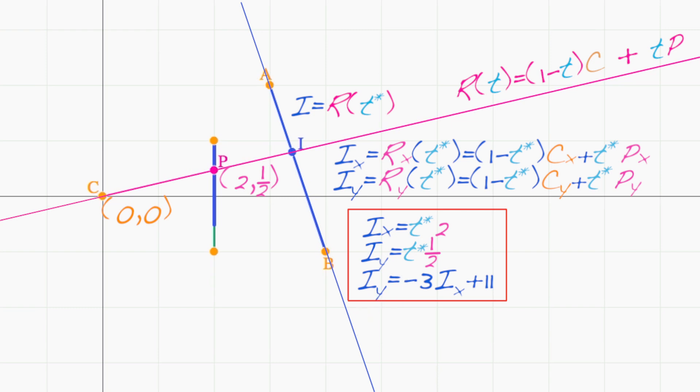We can solve the system of equations by substituting the first two equations into the third to get an equation just in t star: 1 half t star equals negative 3 times 2 times t star plus 11. Solve this for t star, then plug that value of t star into the first two equations to get i sub x and i sub y.